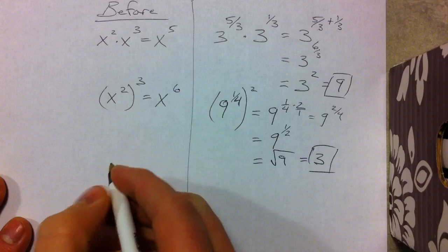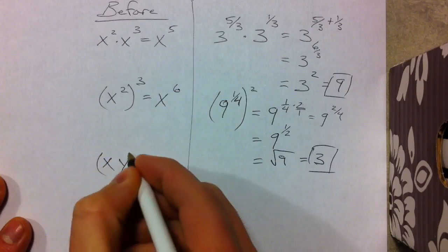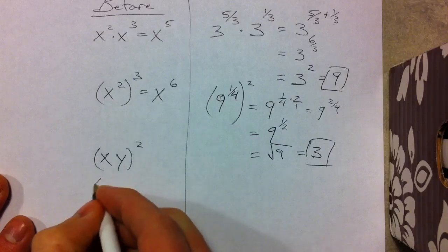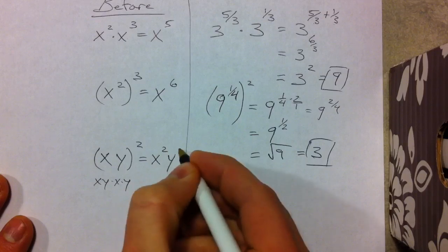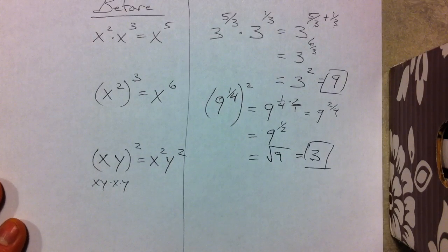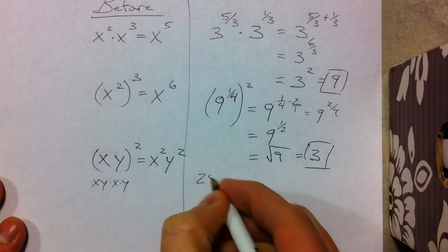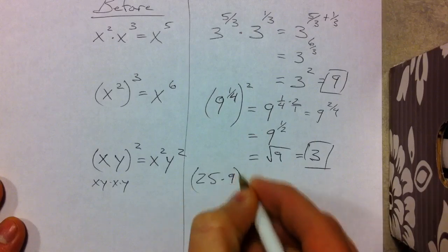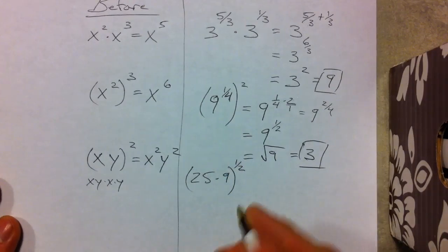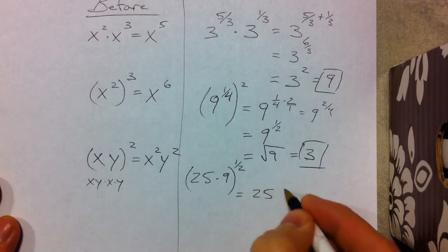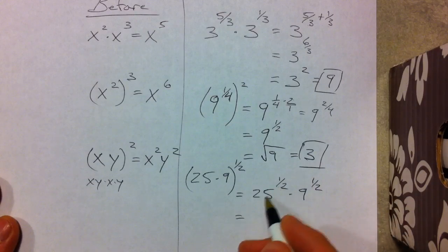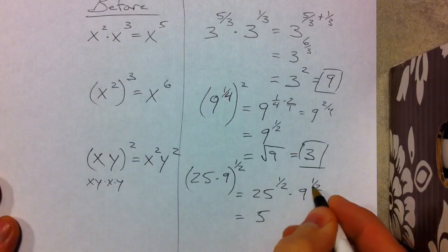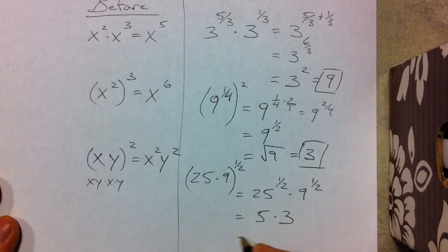Next property: we had x times y squared. Because that's x times y times x times y, you distribute the exponent over multiplication. So if we have 25 times 9 to the 1 half power, that distributes to 25 to the 1 half and 9 to the 1 half — the square root of 25 is 5, and the square root of 9 is 3, giving us 15.